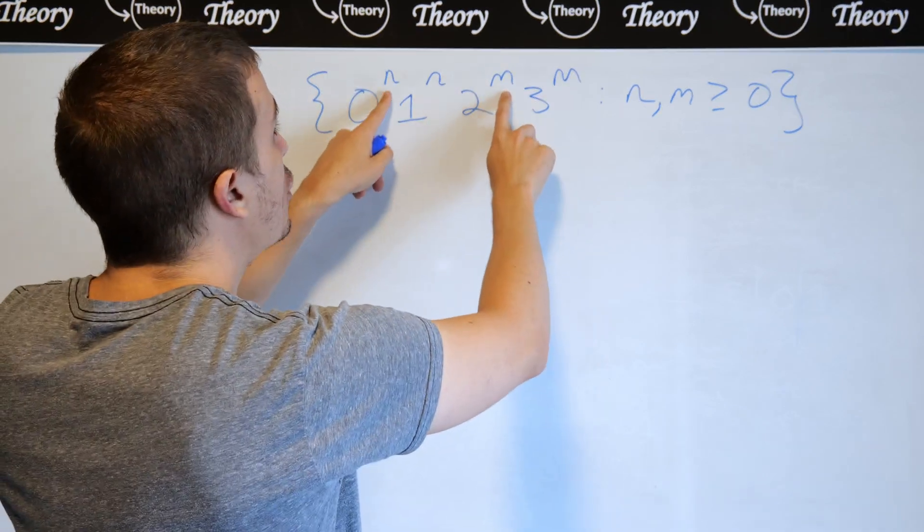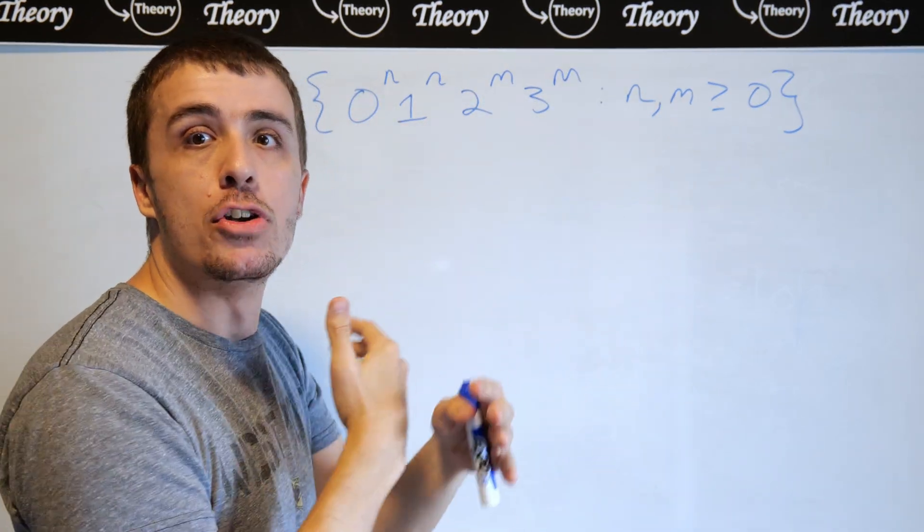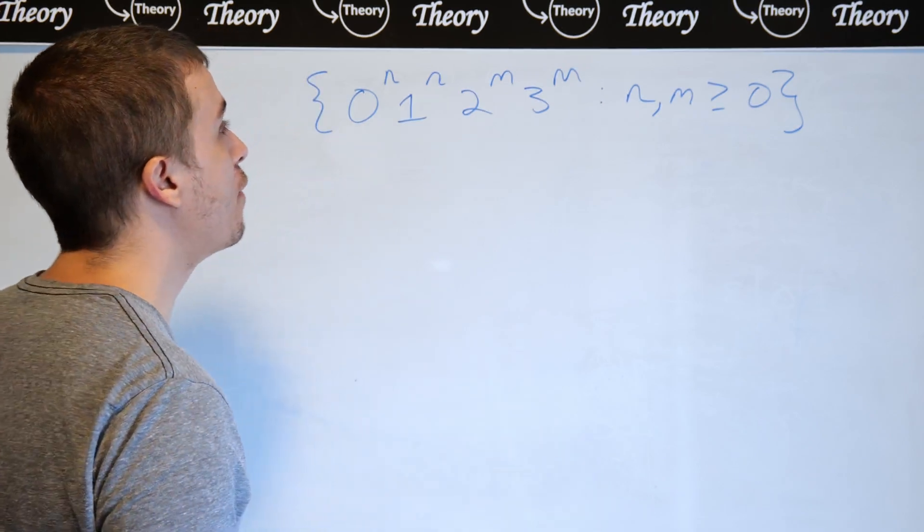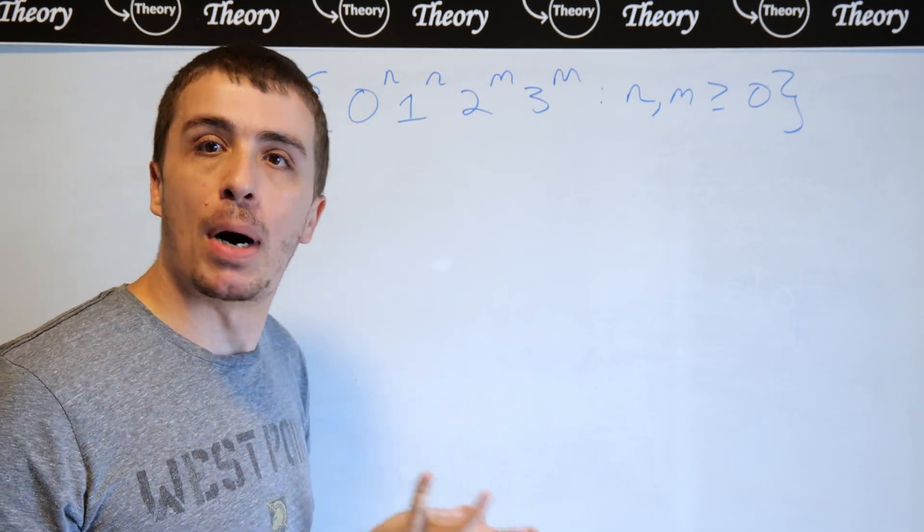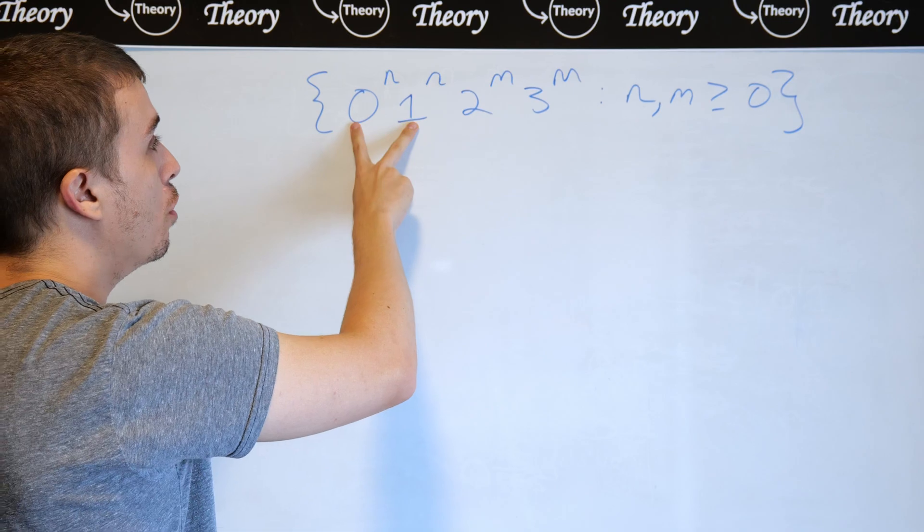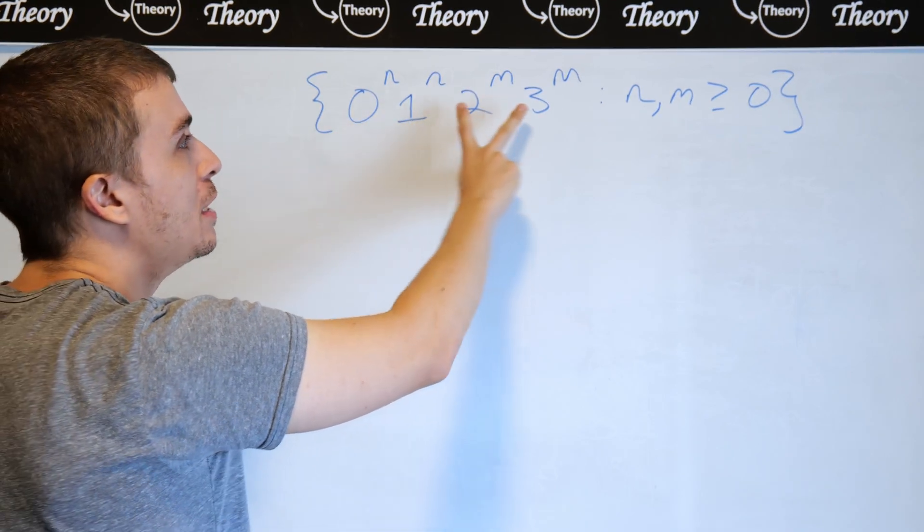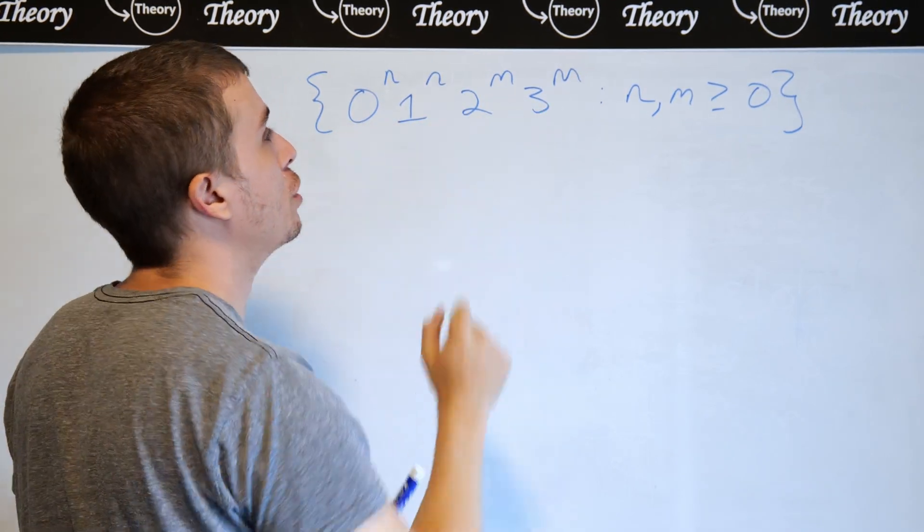Because we know that n and m have no relation to each other whatsoever, we can decompose the problem into the part involving the 0s and 1s, and the part involving the 2s and 3s.